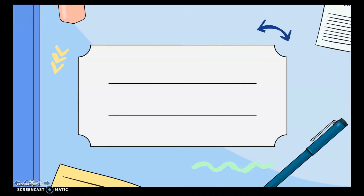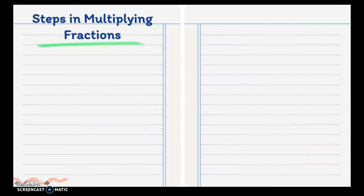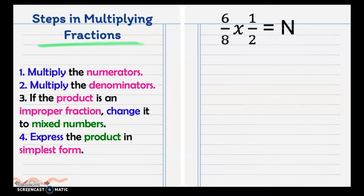Our discussion is all about multiplication of fractions. Steps in multiplying fractions: first, you multiply the numerators; then multiply the denominators. Now, if the product is an improper fraction, change it to mixed numbers; and lastly, express the product in simplest form.